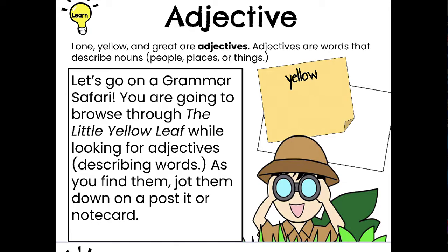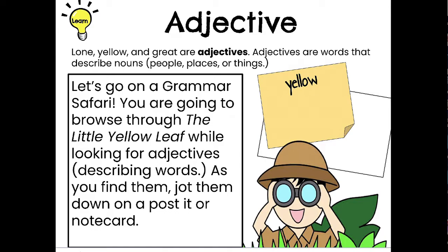You will need your post-it notes, note card, or piece of paper to jot down some adjectives. In lesson 11, we looked through your book to find verbs or action words. Today we are going to look for adjectives, or describing words — words that describe people, places, or things. As you find them, jot them down. For example, if I came across the word yellow, yellow describes the leaf, so I'd write down yellow. Pause the video, look through The Little Yellow Leaf, and jot down as many adjectives as you can find. When you're done, unpause the video.